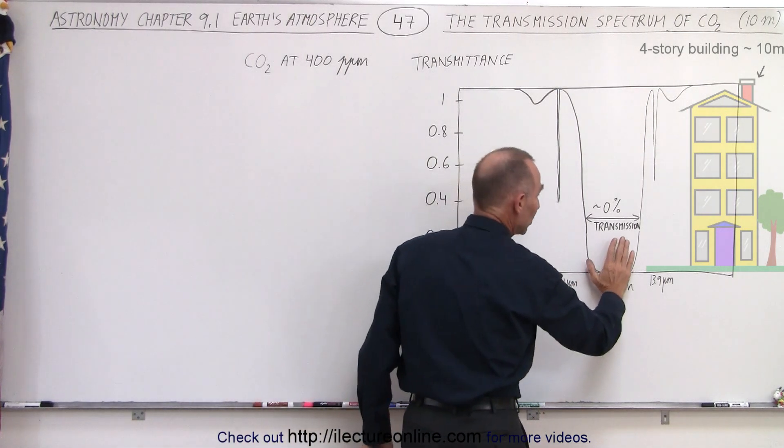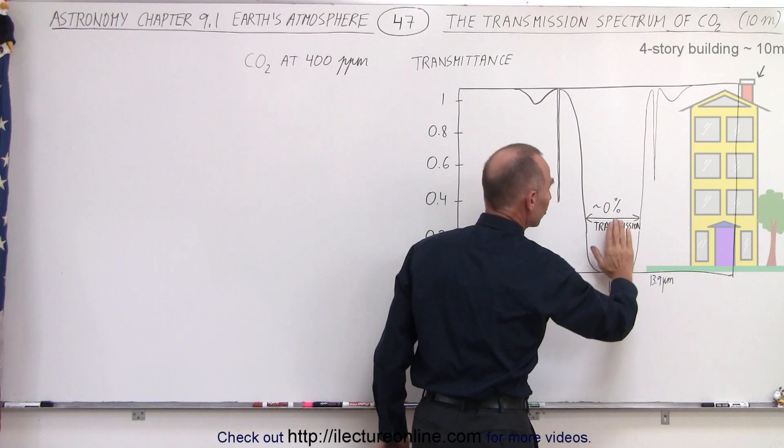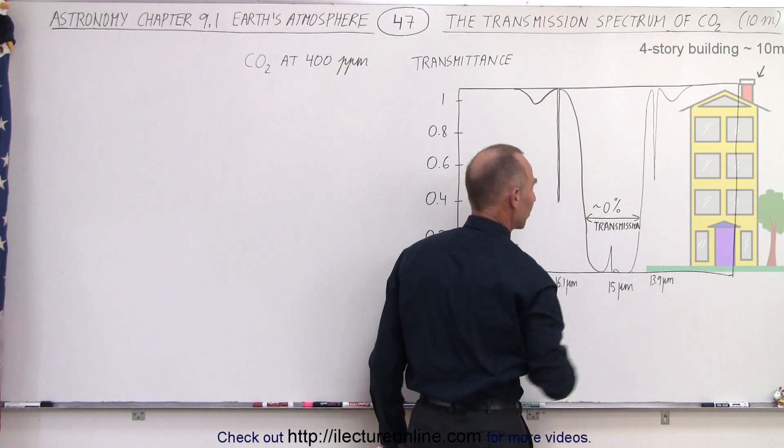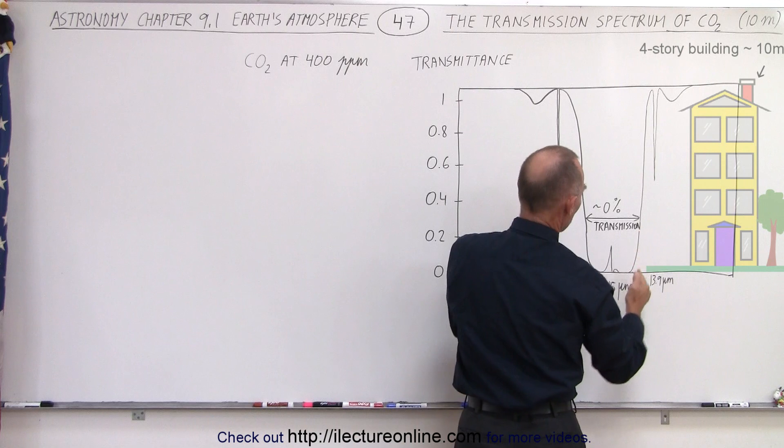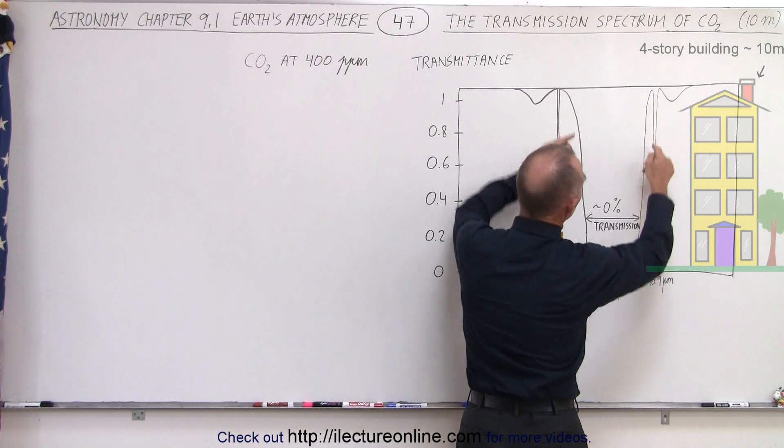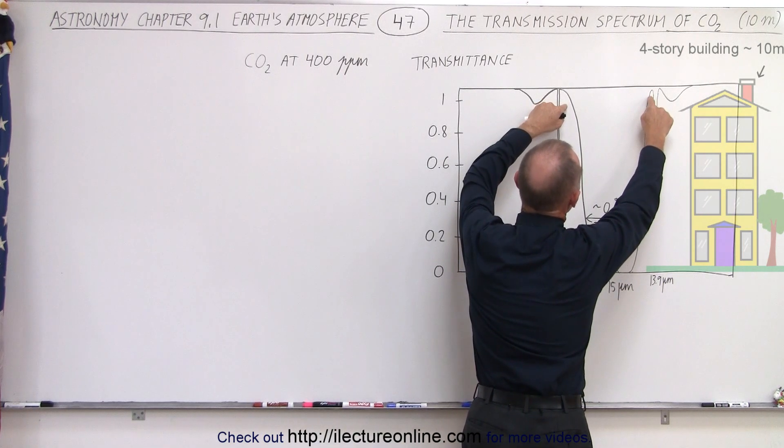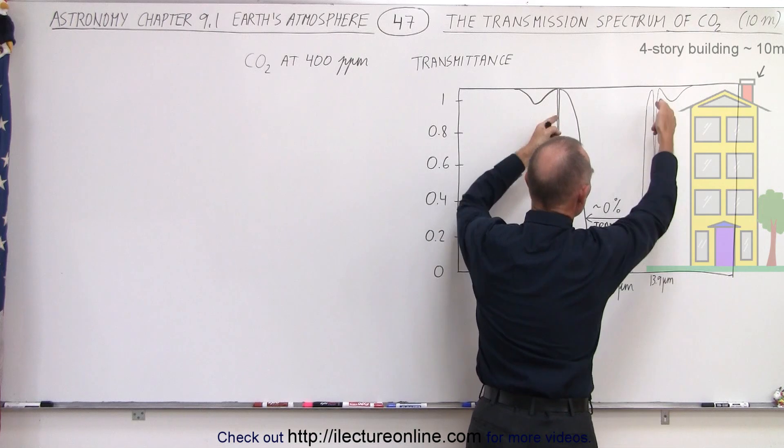So again, carbon dioxide is really good at absorbing this radiation here because virtually none of it is transmitted. We can then see that by the time we reach about 16 and 14 micrometers, the transmission is almost 100 percent, and then we have these two peaks right here.